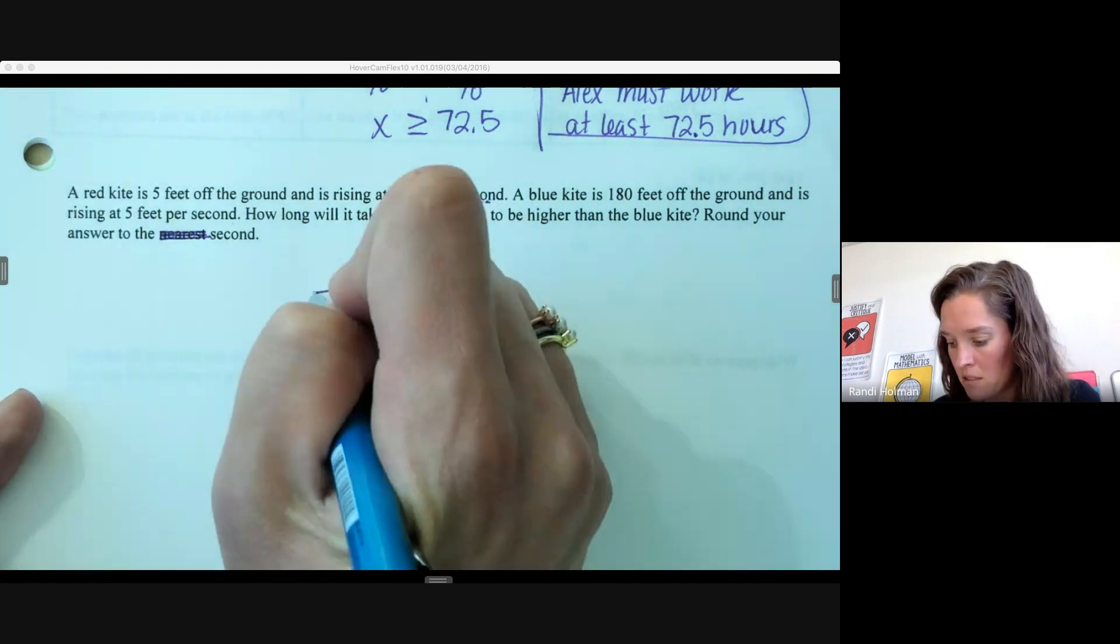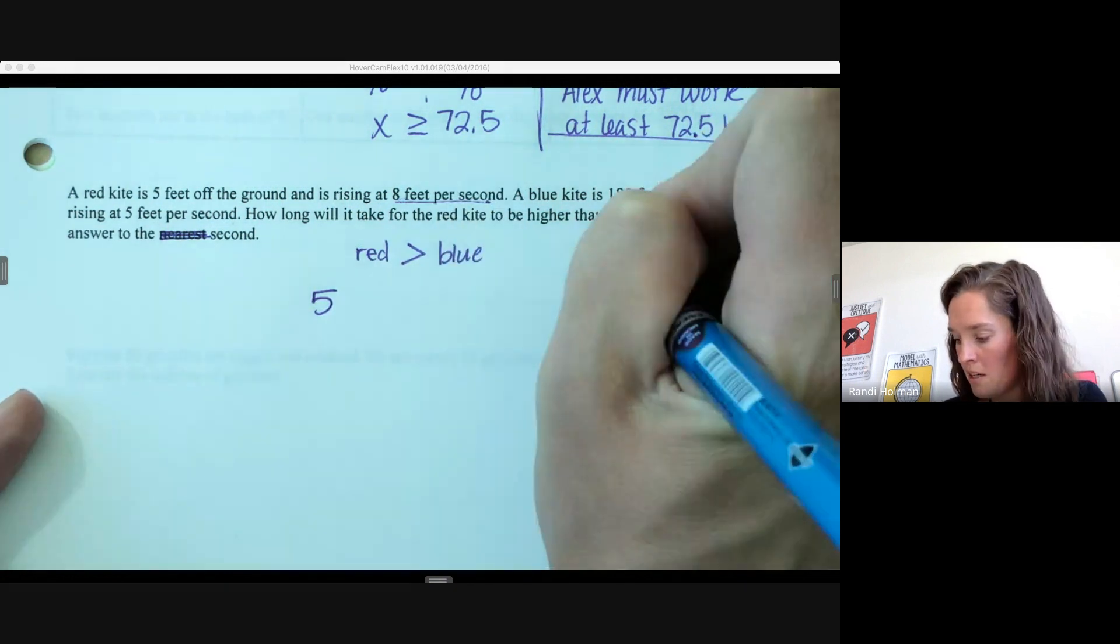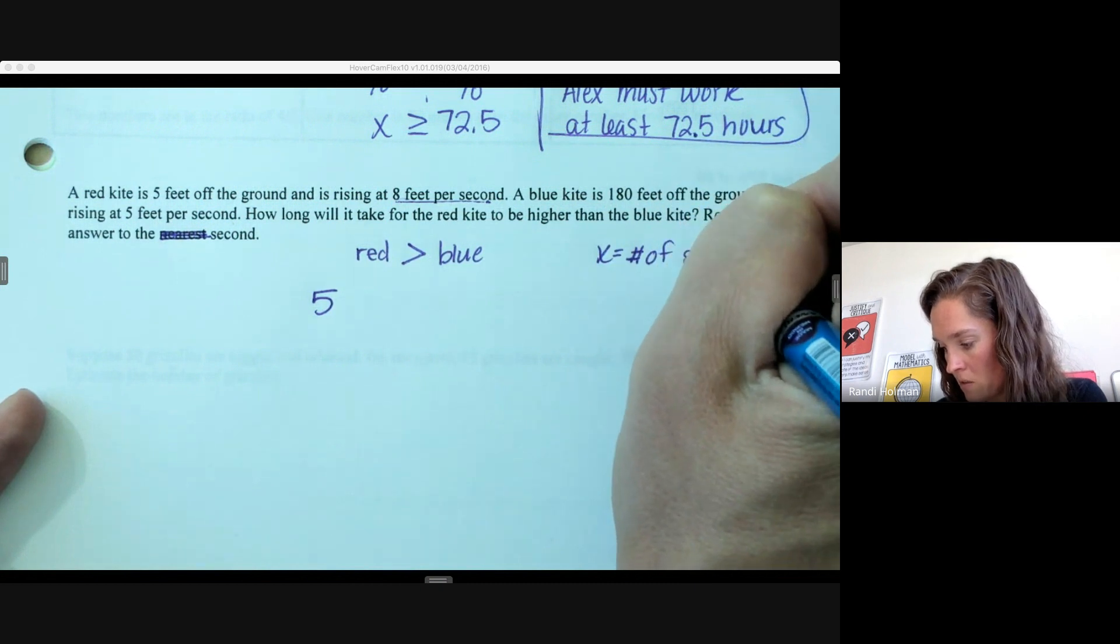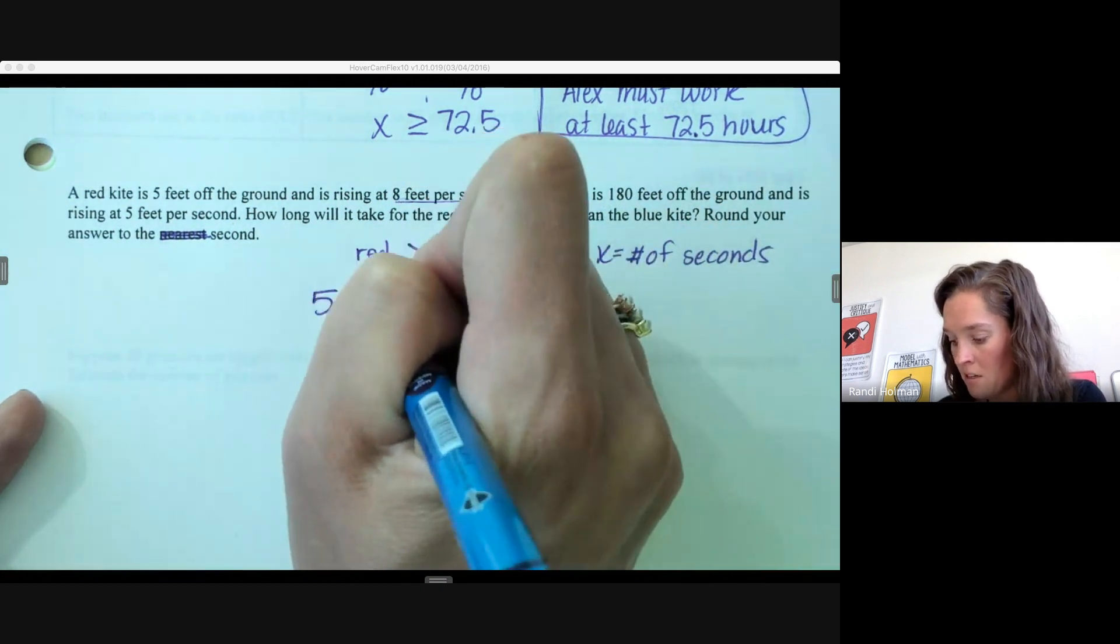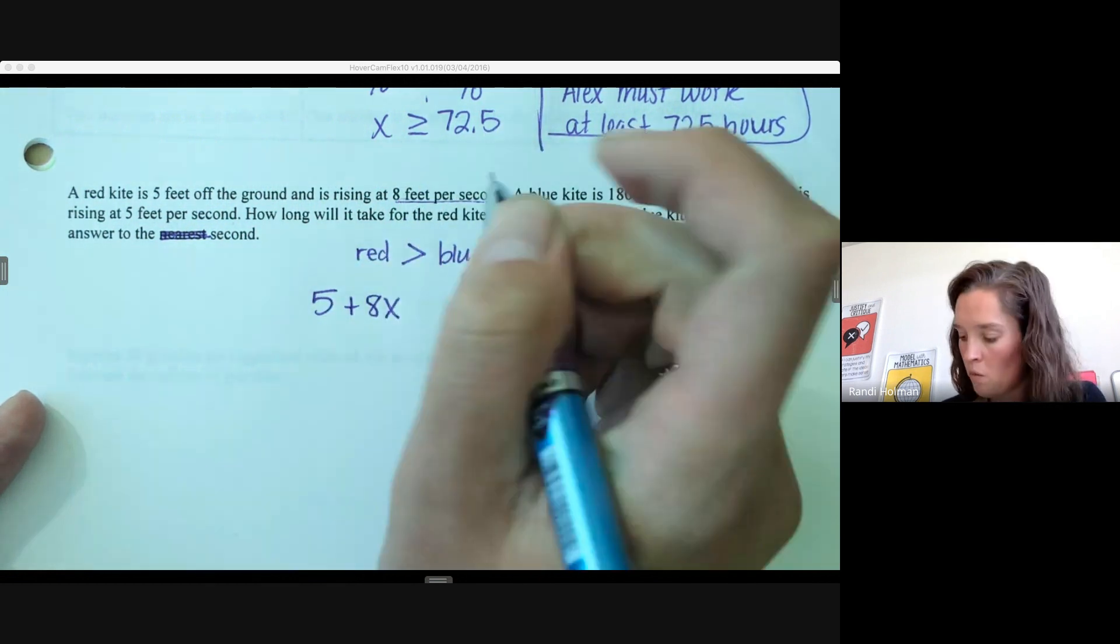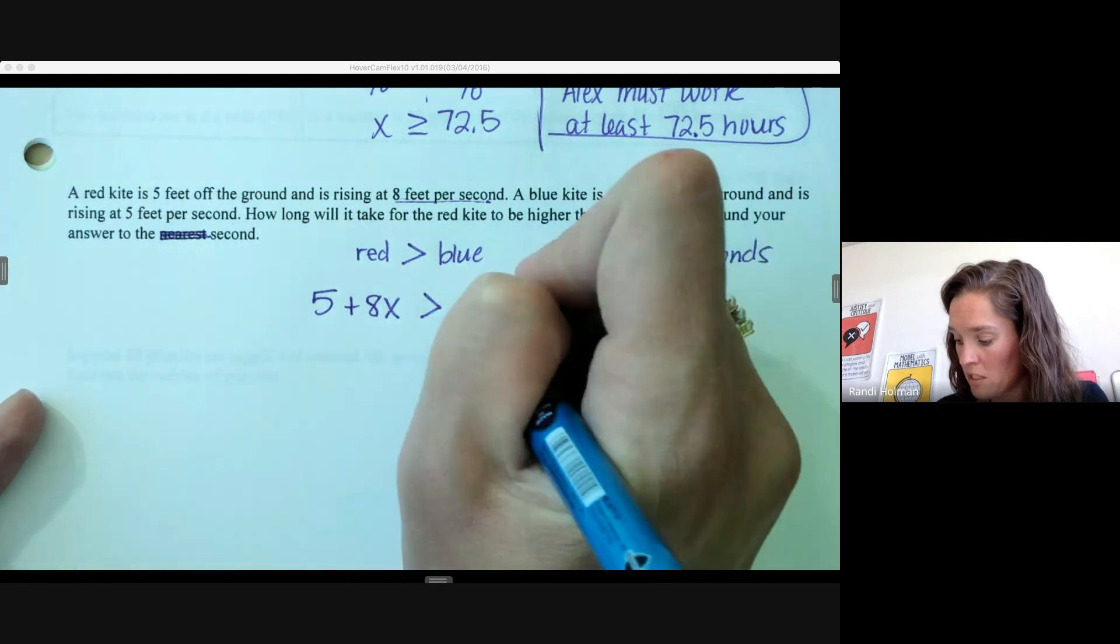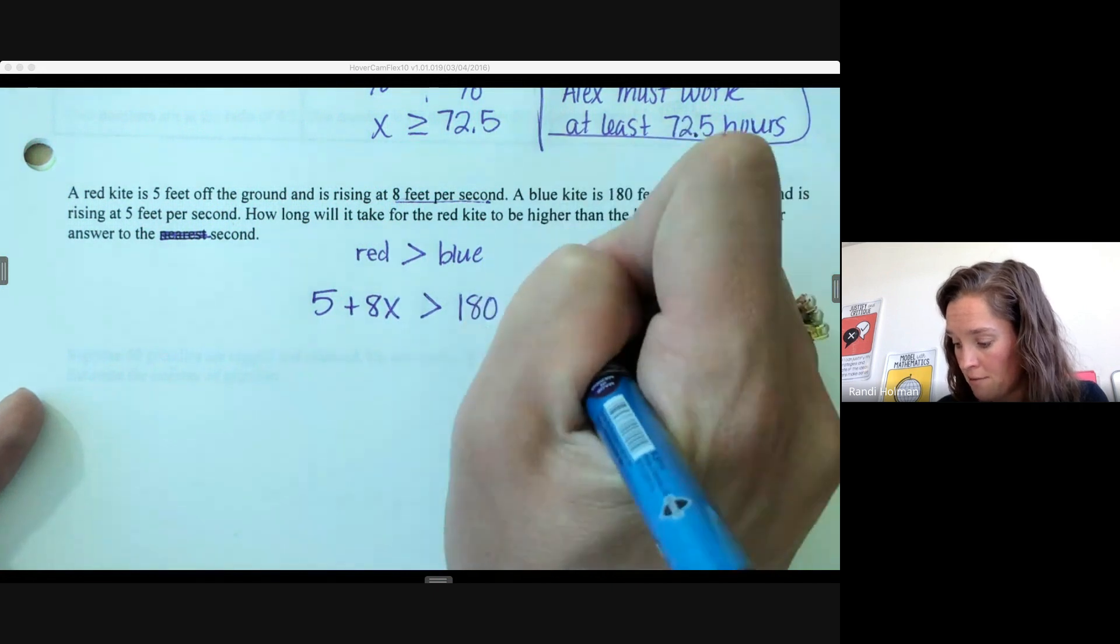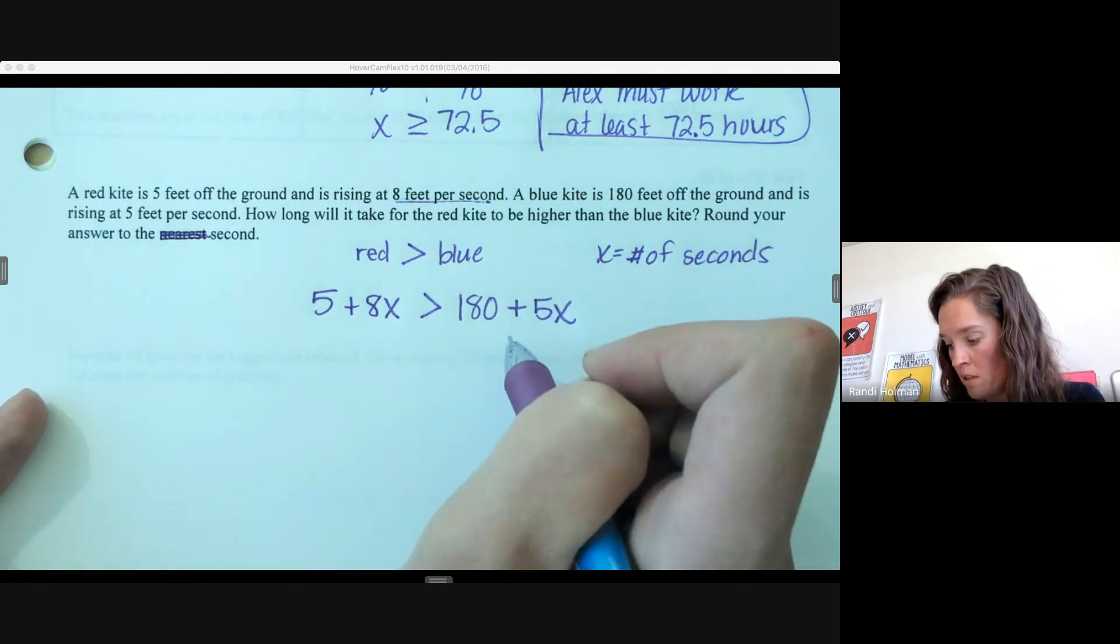That's a constant—where it's starting is not changing. It's at 5 feet, rising 8 feet per second. We should probably define a variable: x equals the number of seconds. So the red kite is 5 feet plus an additional 8 feet per second. We want that to be greater than the blue kite, which is 180 feet and is rising at 5 feet per second. Now that we have our inequality, we're going to solve.